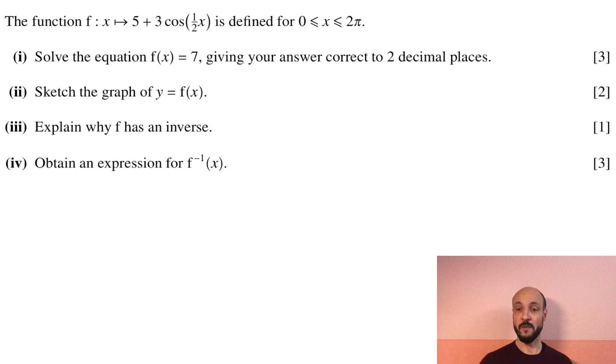Part (i): Solve the equation f(x) equals 7, giving your answer correct to two decimal places. Part (ii): Sketch the graph of y equals f(x). Part (iii): Explain why f has an inverse. Part (iv): Obtain an expression for f to the minus 1 of x.